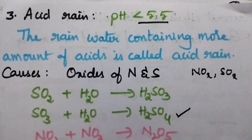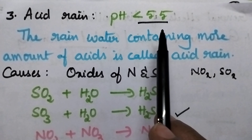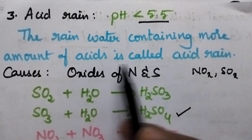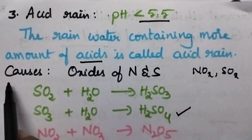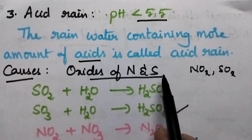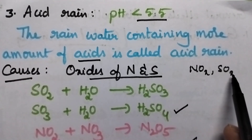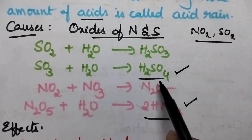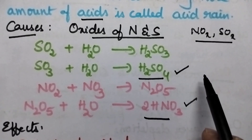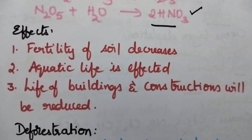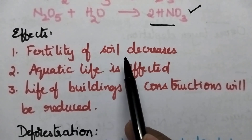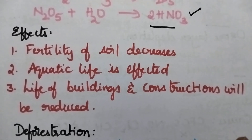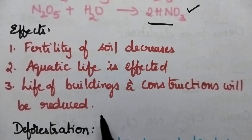The third adverse effect is acid rain. If the pH of the rain water is less than 5.5, it is called acid rain. Acid rain is due to the presence of excess acids in rain water. Whenever the atmosphere consists of oxides of nitrogen and sulfur — that means NOx and SOx — they are responsible for the formation of sulfuric acid and nitric acid in the atmosphere. They combine with rain water and reach the earth in the form of acid rain. Effects of acid rain include decrease in the fertility of soil, aquatic life being affected, life of building materials being affected, and notably the Taj Mahal is affected by acid rain.